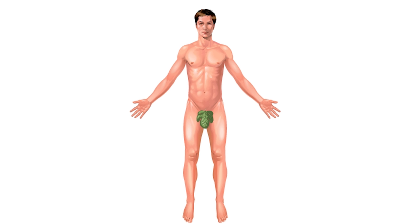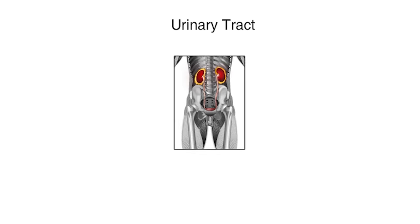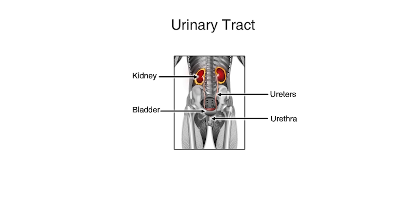Before we talk about how kidney stones are formed, take a moment to become familiar with the urinary tract. The urinary tract includes the kidneys, ureters, bladder, and urethra.